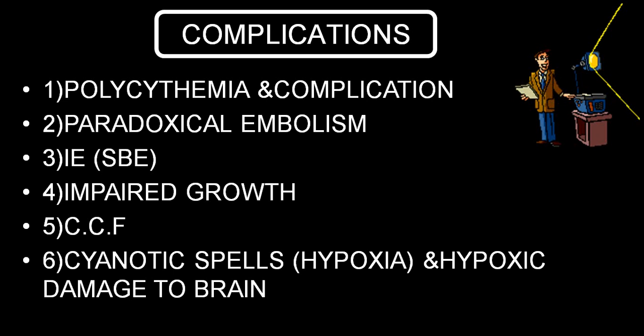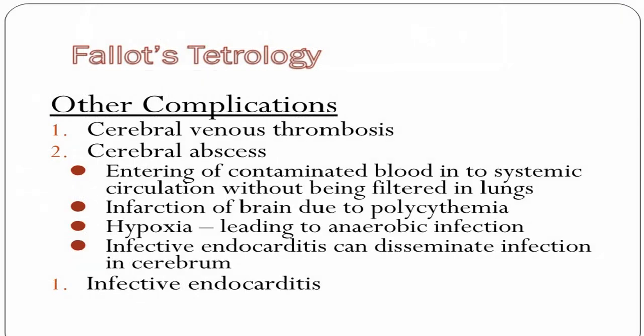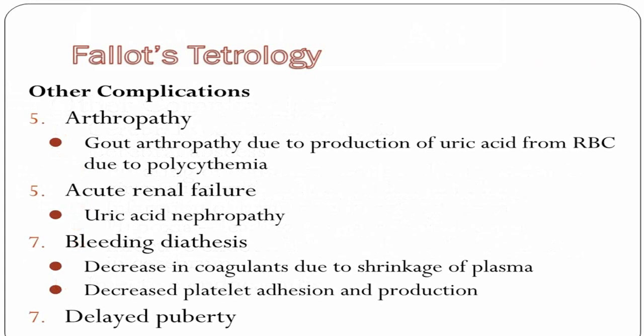Complications are very frequently due to polycythemia: paradoxical embolization, infective endocarditis, impaired growth, congestive cardiac failure or right ventricular failure, cyanotic spell or hypoxic spell, hypoxic brain damage, and paradoxical embolization leading to systemic involvement. Other complications include cerebral venous thrombosis secondary to polycythemia, infective endocarditis producing cerebral abscess, arthropathy, AKI, bleeding diathesis, and delayed puberty.